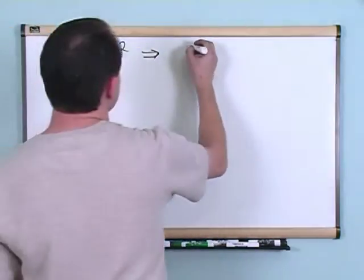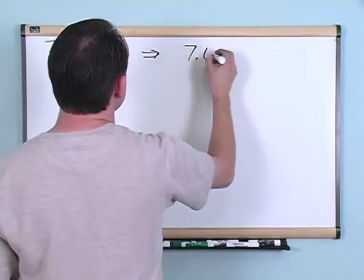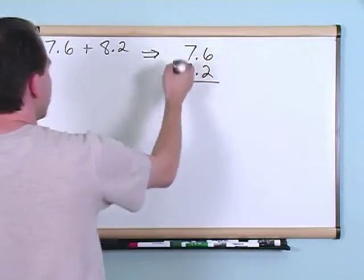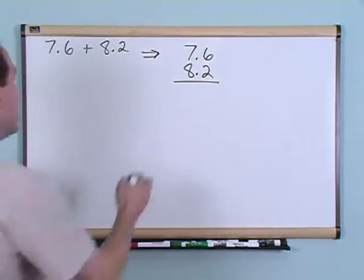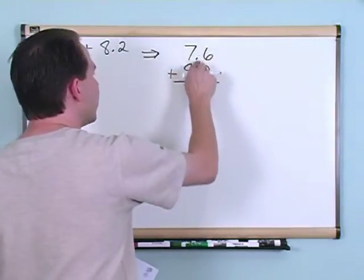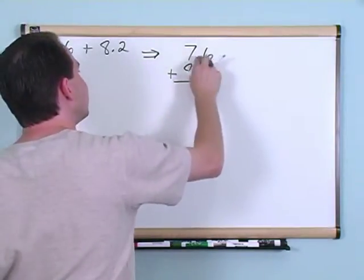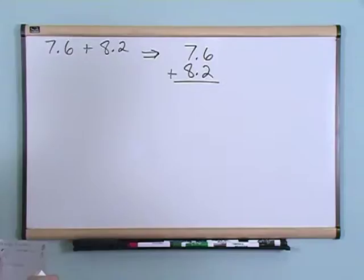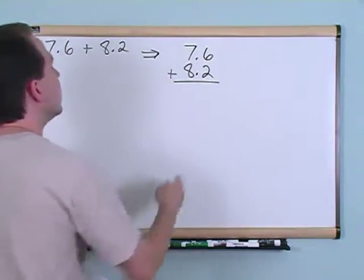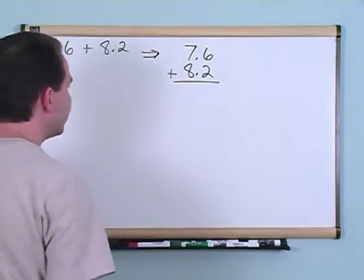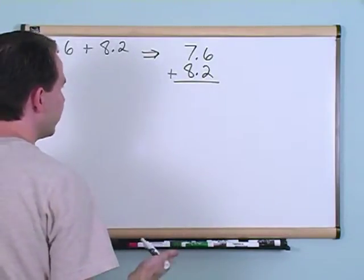You're going to do the same thing you always do. You're going to line these things up on top of each other and keep your decimal points. What you want to do is line these decimal points up one on top of each other. Then after that you're going to add just like you always add.